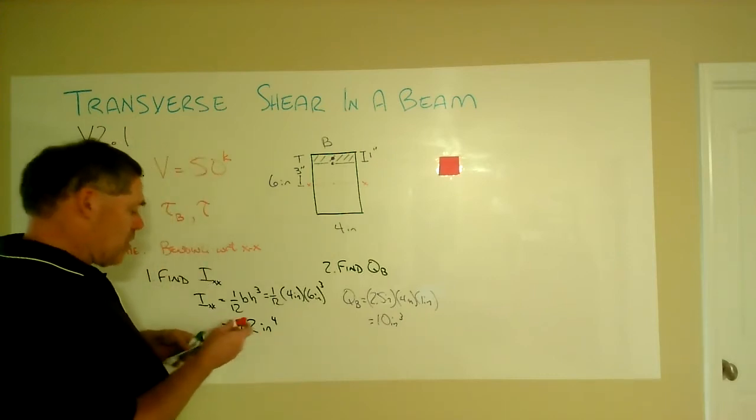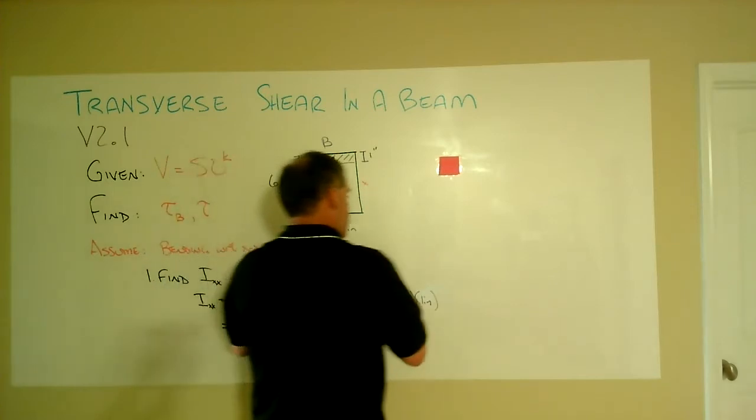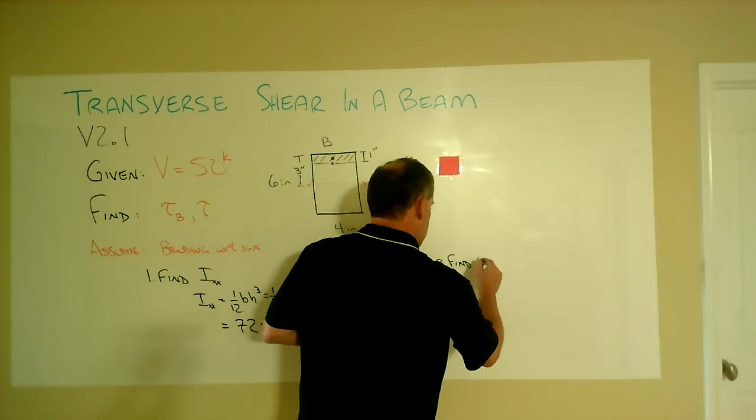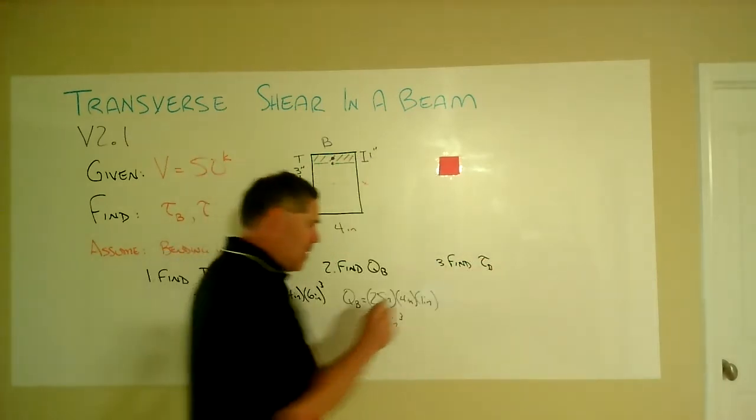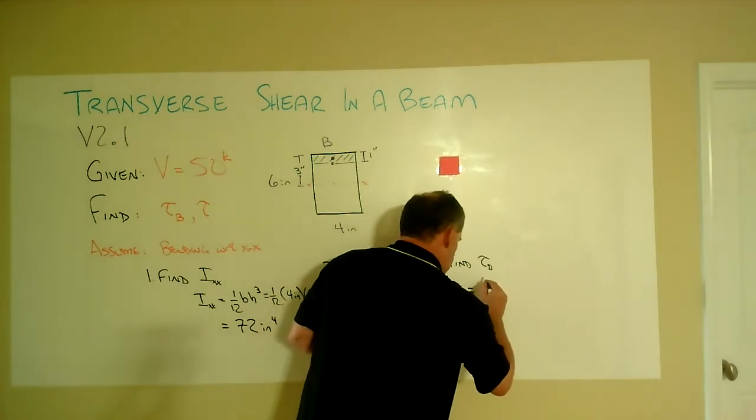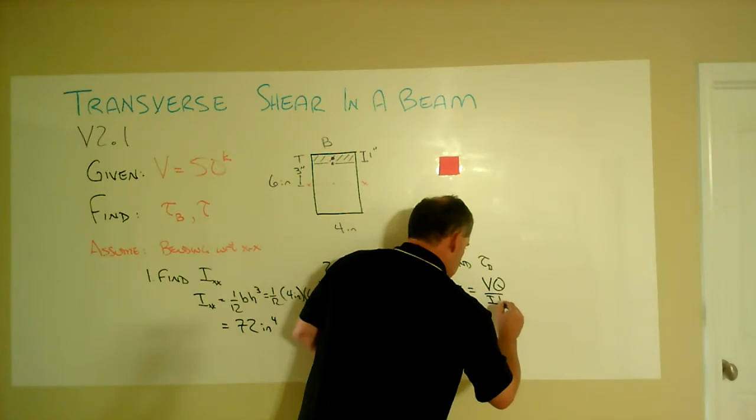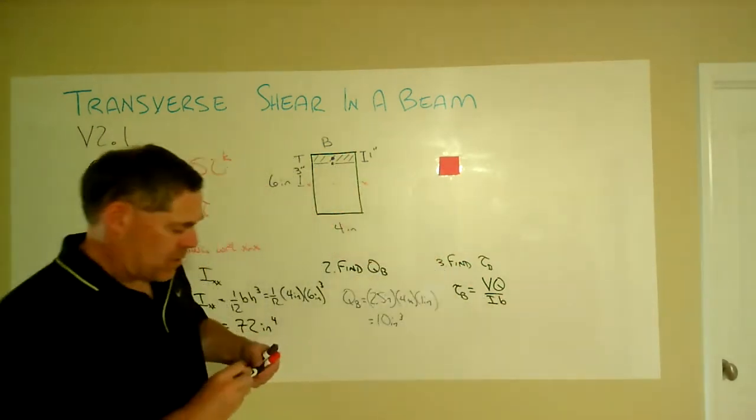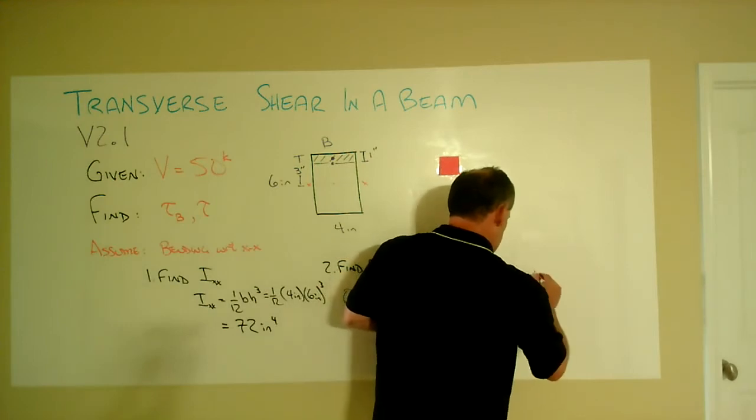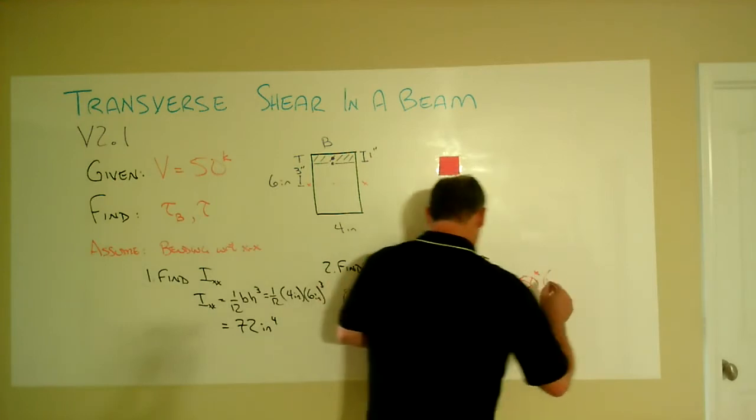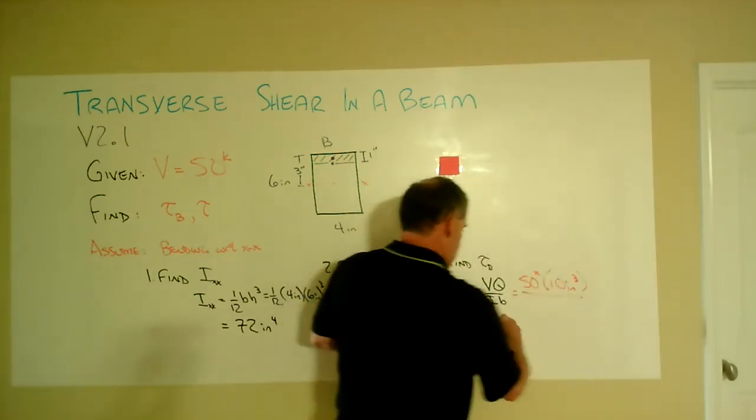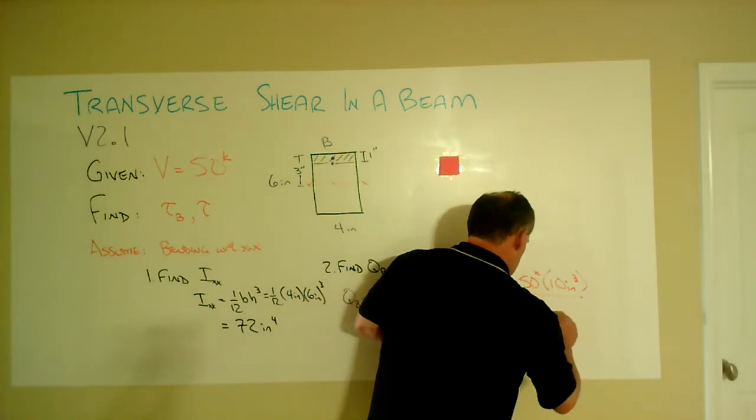So now we can find our shear stress at B. Tau_B is equal to VQ over IB. And so here that would be our 50 kips times our Q value of 10 cubic inches divided by our I, which is 72 inches to the fourth.